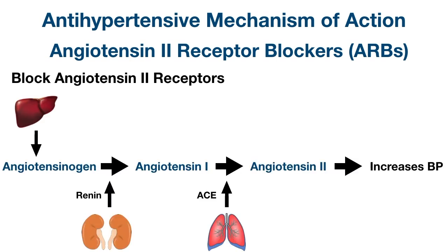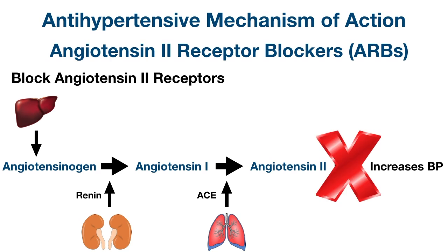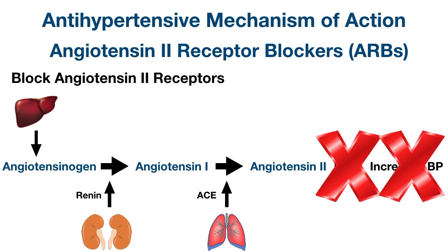Again we can see the renin-angiotensin-aldosterone system at work. This time, however, we're not inhibiting angiotensin converting enzyme, but blocking the angiotensin 2 receptors. If angiotensin 2 can't bind to its receptors, we won't have the downstream effects that would normally increase blood pressure.